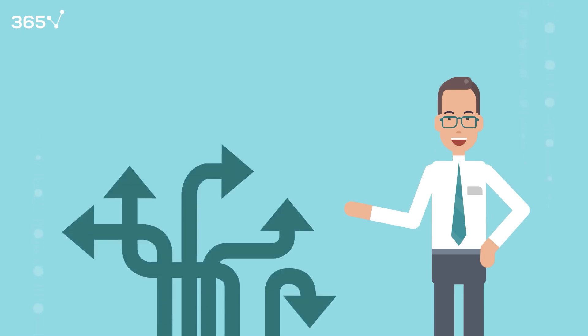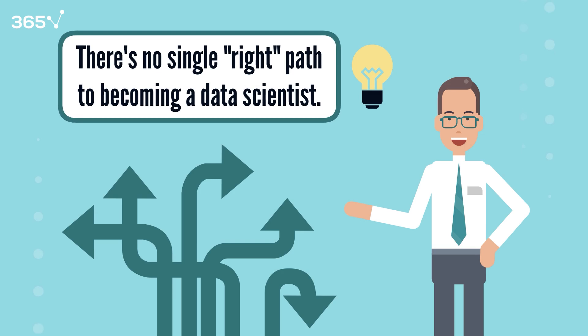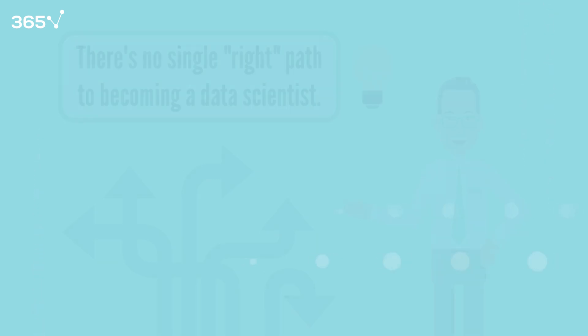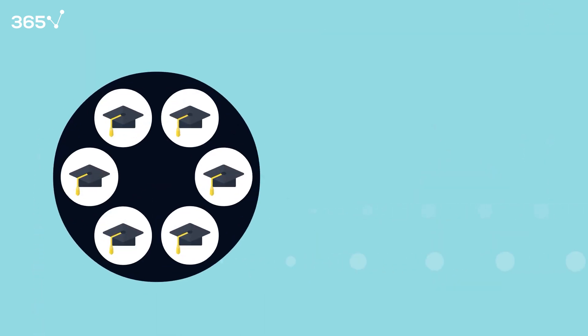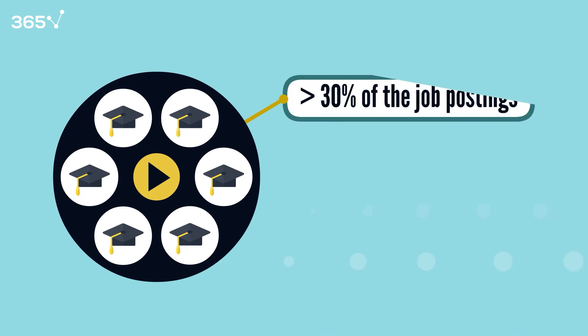Before we jump into our countdown, let's address something important. There's no single right path to becoming a data scientist, but specific degrees can give you an advantage in the field, depending on your background and the area you hope to work in. Each degree mentioned in this video appeared in over 30% of the job postings, with employers often listing multiple degree options.